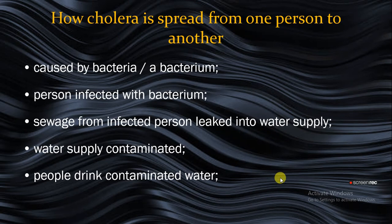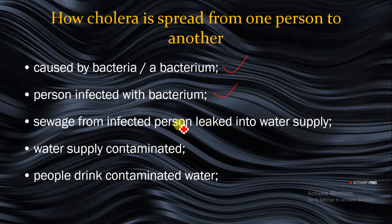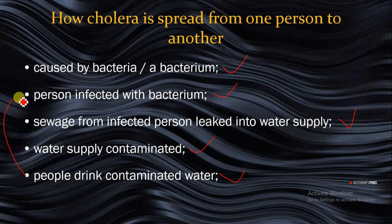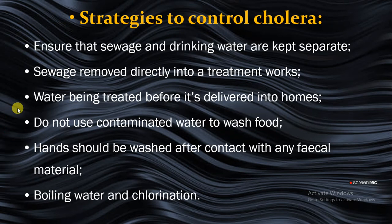How cholera is spread from one person to another: cholera is caused by the bacteria Vibrio cholerae. A person infected with this bacteria uses the toilet to defecate, and the sewage from the infected person leaks into the water supply. The water supply becomes contaminated, and when another person drinks the same water, they become infected by the bacteria.